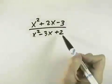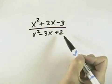Here we want to simplify this rational expression. To do so, we can only cancel like factors.